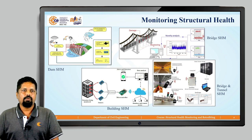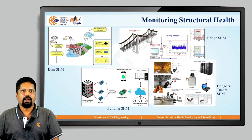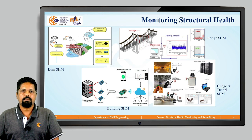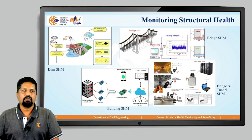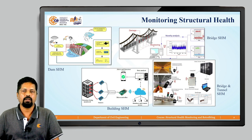The third one is building structural health monitoring, where we use both real-time and periodic monitoring. Different sensors are attached to the building to get real-time data. The last picture shows bridge and tunnel structural health monitoring. These structures are considered highly critical, so a higher-precision monitoring system is required to get real-time data and receive different warning alerts regarding their health.